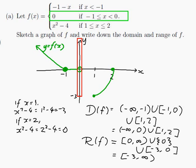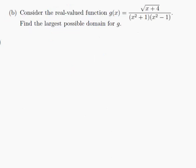There is my domain and my range. Now for part B: consider the real valued function g of x equal to the square root of x plus 4, all over x squared plus 1 times x squared minus 1. Find the largest possible domain for g. The domain of g is the x values I am allowed to put in so that the function is still defined — we only exclude places where it is actually undefined.